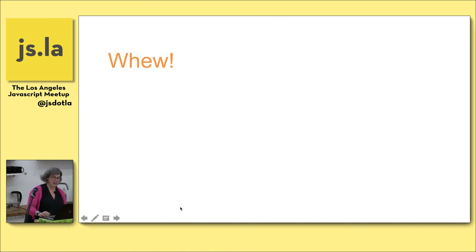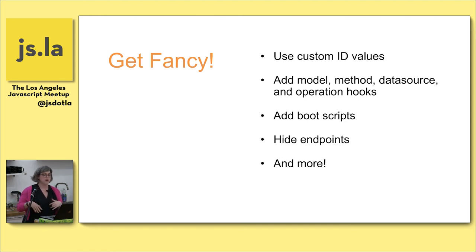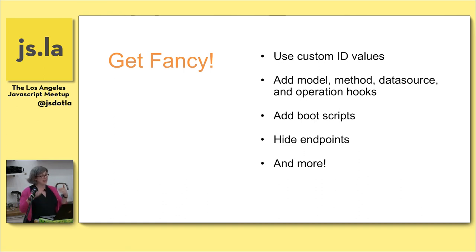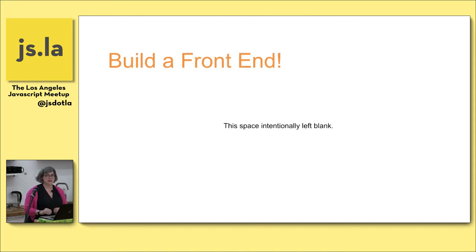You can do a lot of fancy things with Loopback: use custom ID values, add hooks before and after each API call — so you can validate data before it gets saved — add boot scripts that run when the app starts up, hide endpoints, and of course build a front-end once you have your API.